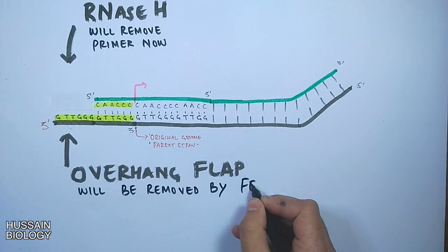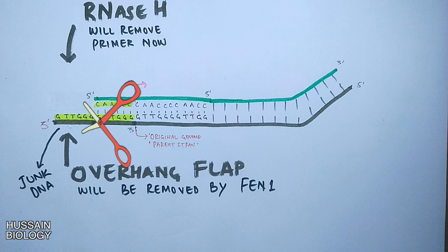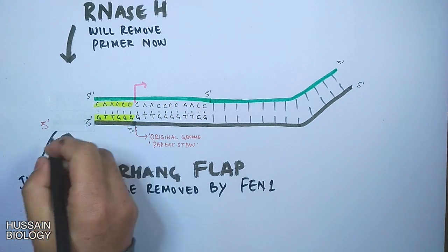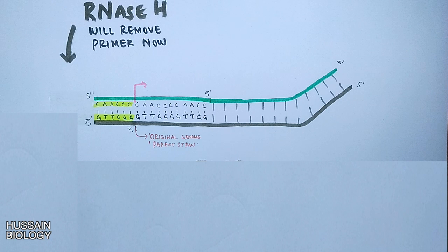Now we can remove the parent strand overhang flap, because this is junk DNA synthesized by the telomerase enzyme — we only need the actual part of the DNA on the right. So FAN1 comes in and cuts down the overhang flap at the end of the telomere. With this, we do not cut the DNA of the organism; rather, we cut the newly synthesized DNA called the telomere. In summary, telomerase replication saves the tail or end of DNA. What telomerase enzyme does is elongate the parent strand so that the overhang that needs to be removed is not the actual genomic DNA.